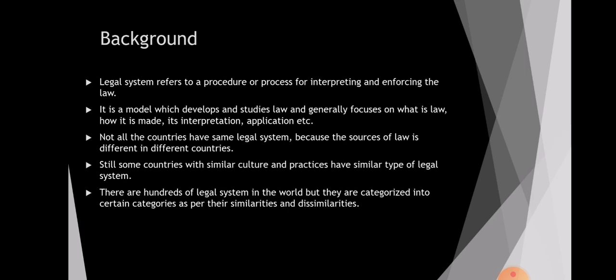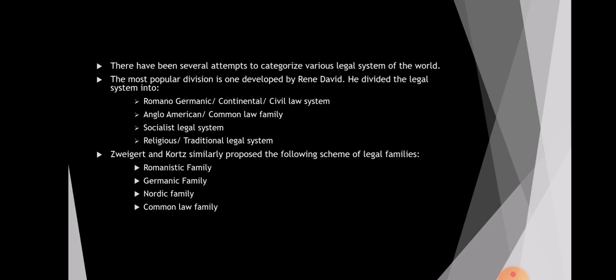There are hundreds of legal systems in the world, but with the help of their similarities and dissimilarities they can be categorized into certain categories. There have been several attempts at categorization. The most popular one is given by René David, who classified legal systems into four classes: the Romano-Germanic or civil law system, the Anglo-American or common law family, the socialist legal system, and the religious or traditional legal system.